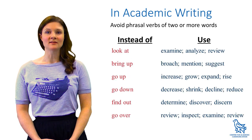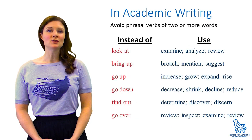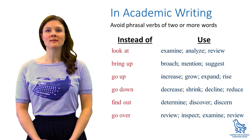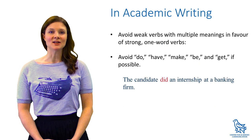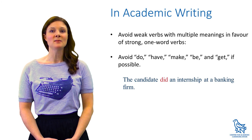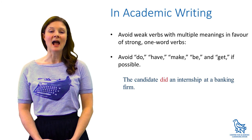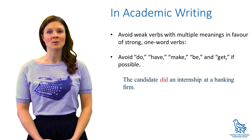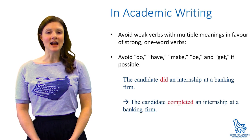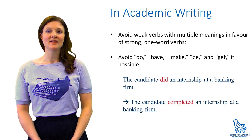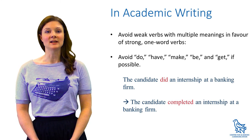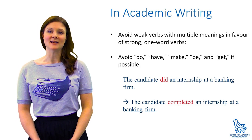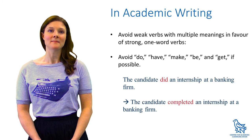Also try not to use phrasal verbs in academic writing. These are two or more word verbs that combine a verb and a preposition. Many of these combinations also contain a verb that has multiple meanings — such as have, do, get, and be — which can cause confusion. Instead, use a single specific verb. The good news is that there really aren't that many high-frequency academic verbs, so learning these thoroughly in all their forms is a valuable investment of your study or writing practice time.